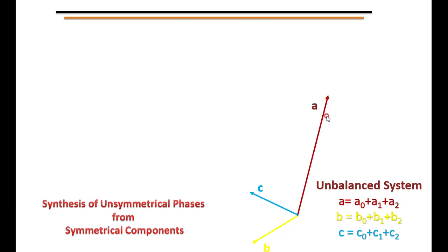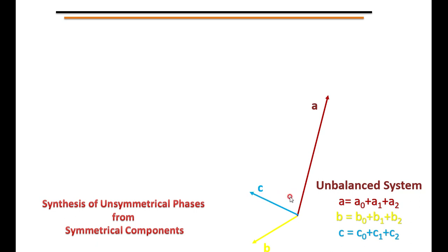I have got an unbalanced phasor — meaning the magnitudes of all three phases are not equal to each other. Phase A has the greatest value, B has a different magnitude, and C also has a different magnitude. At the same time, the phase displacement between A to B, B to C, or C to A is not 120 degrees. In a balanced system, A, B, C have the same magnitude and phase displacement of exactly 120 degrees. Therefore, this is an unbalanced system.